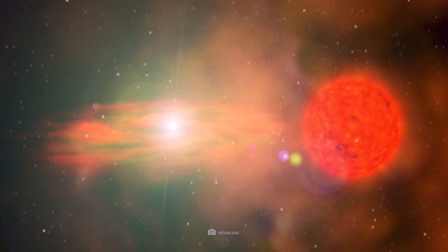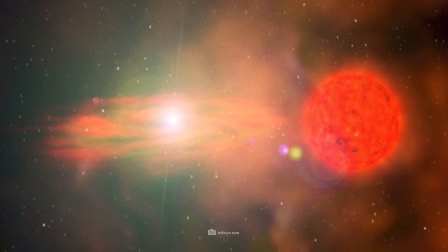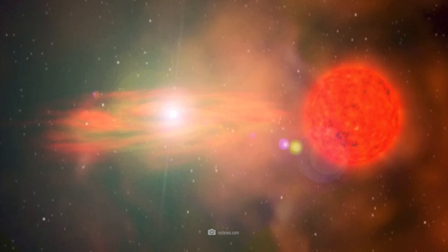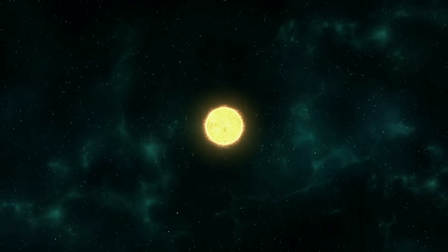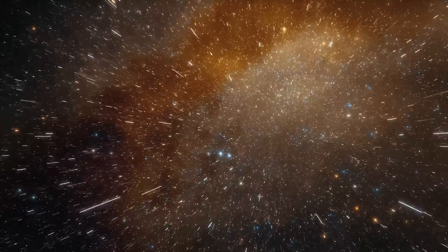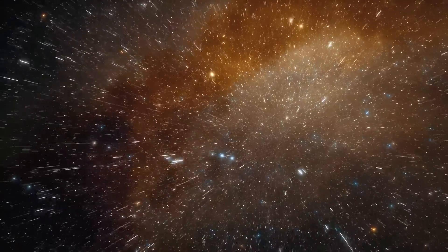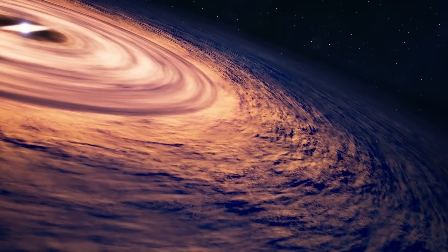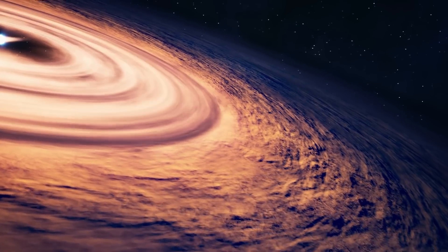As soon as the red giant has fed the accretion disk of the white dwarf to such an extent that a critical mass is reached, fusion processes begin, which are reflected in the form of explosive bursts of brightness. Such a process is known among star researchers as a nova, and T. CRB undergoes so-called recurrent novae, which means nothing other than that the radiant spectacle repeats itself over time.